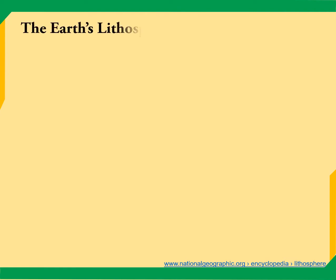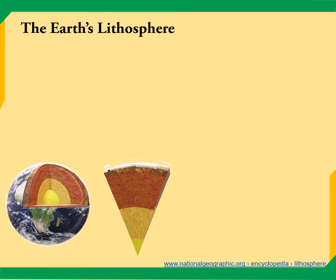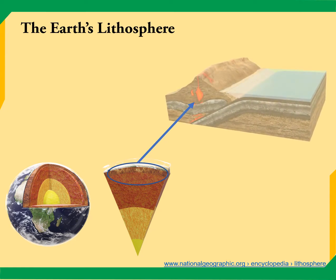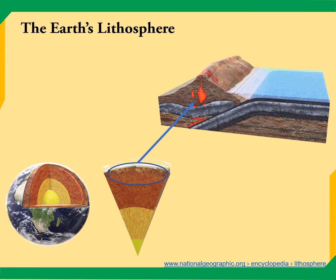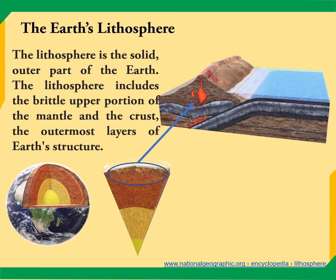The Earth's lithosphere is composed of the crust and the mantle. If we were to cut through the Earth like slicing an ice cream, we can see the lithosphere. The upper portion is the crust and the lower portion is the upper part of the mantle. The lithosphere is the solid outer part of the Earth, including the brittle upper mantle and the crust — the outermost layer. Even if it is under the ocean, it is still considered crust.